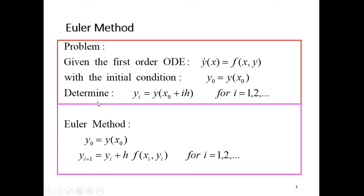You want to determine your next y value, so you evaluate y at x zero plus i*h for i = 1 and so on. For the Euler method, you need to know y zero, your initial conditions. If you have your initial conditions y zero equals y evaluated at x zero, then your next value will be evaluated at x i+1. When i is zero, you get y one, which is given by y zero plus h*f(x).